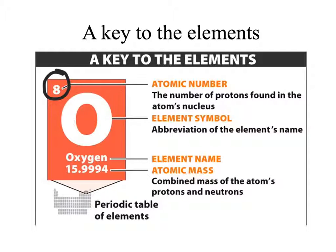If we want to figure out how many neutrons are in an atom, we can subtract the atomic number from the atomic mass. So in the case of oxygen, we have an atomic mass of approximately 16, and we can subtract the 8 protons seen from the atomic number.